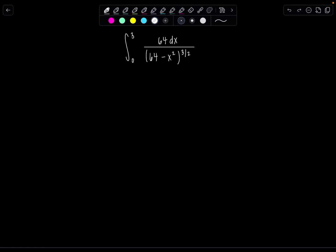Welcome to Math with Professor V. Here is your latest integral of the day. We have the definite integral from 0 to 3 of 64 over (64 minus x squared) all raised to the 3 halves dx.